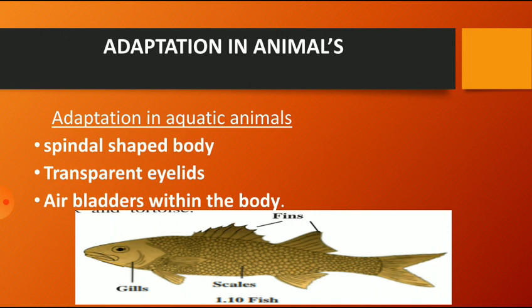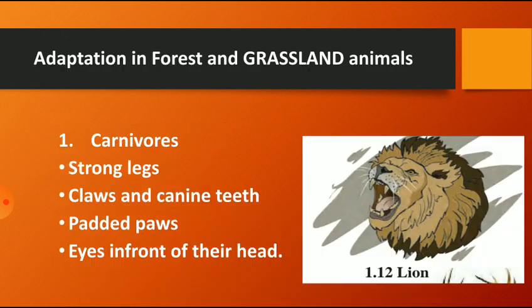Fish is the example for adaptation in aquatic animals. Next, the adaptation in forest and grassland animals — in the forest and grassland there are both types of animals: the first is carnivorous and the second is herbivorous.